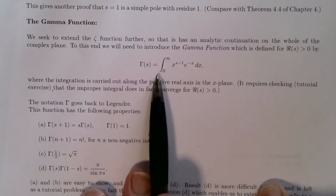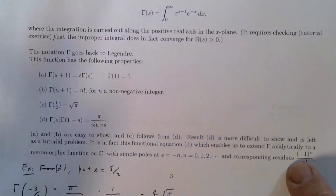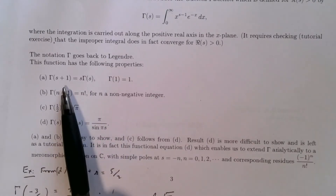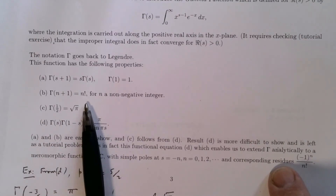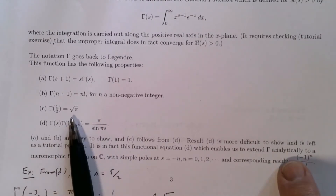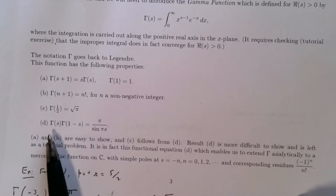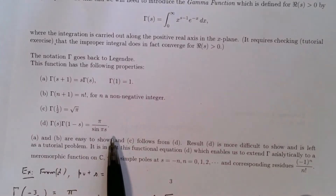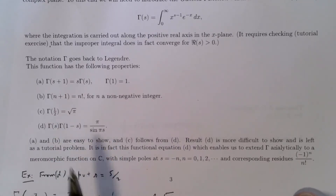We also introduced some properties of this function: in particular, this iterative formula which enables us to build up values one from the other; the fact that gamma of n plus 1 is n factorial if n is a non-negative integer; gamma of a half is root pi; and this lovely formula gamma of s times gamma of 1 minus s equals pi on sine pi s, which enables us to analytically continue the gamma function to the whole complex plane, where it is meromorphic with simple poles at zero and the negative integers.